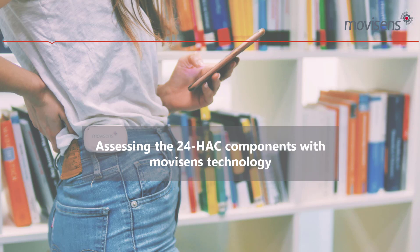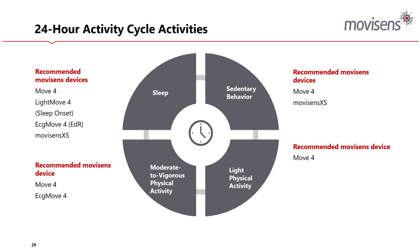Assessing the 24-hour activity cycle components using our technology — what devices work where, and what are the benefits, drawbacks, and limitations? Our base device, the MU4, can cover most bases to a certain resolution of detail. For sleep, the MU4 is fantastic; for sedentary behavior, it's exceptional; light physical activity, it's also good; and moderate to vigorous physical activity — it also fits the bill.